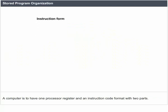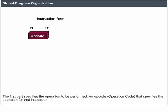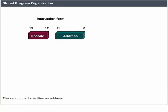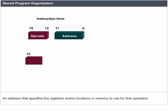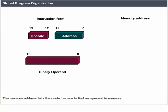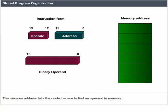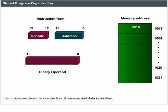Stored program organization: a computer is to have one processor register and an instruction code format with two parts. The first part specifies the operation to be performed — an opcode that specifies the operation for that instruction. The second part specifies an address — the registers and/or locations in memory to use for that operation. The memory address tells the control where to find an operand in memory. Instructions are stored in one section of memory and data in another.